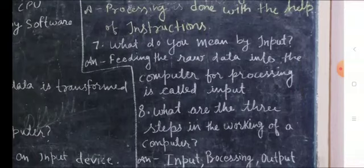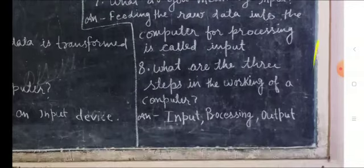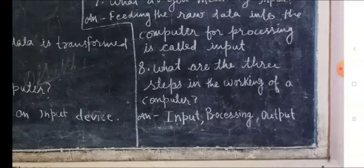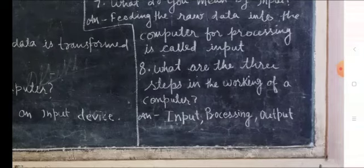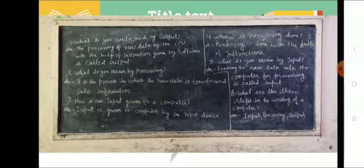Number eight, what are the three steps in the working of a computer? Answer will be input, processing, and output. Ye hota hai iska working steps. Either hum dekhenge, pehle fill in the blanks dekhenge.